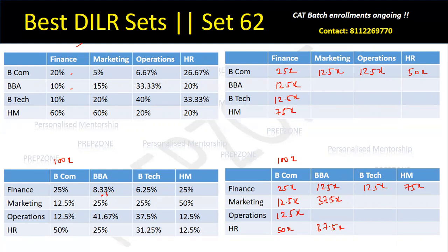If 25% is 37.5X, one way is to multiply by 4 to get 100% of the BBA value — that would be 150X. Another way: can I find a correlation between 8.33% and 41.67%? It turns out 41.67% is 5 times of 8.33%, so that's 5 times 12.5X, which is 62.5X. And 25% was 37.5X, so 37.5X into 4 gives 150X as the total BBA students. I'll fill the values: 37.5X and 62.5X.